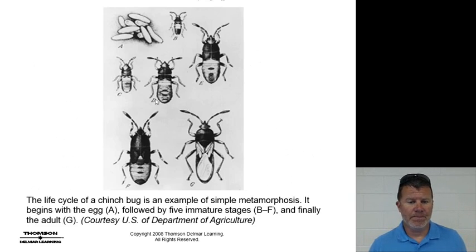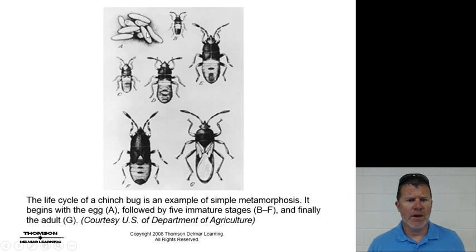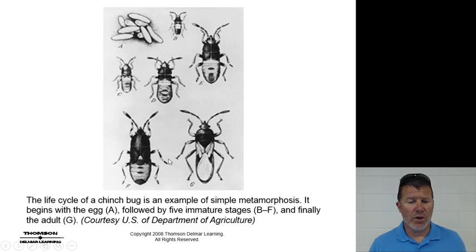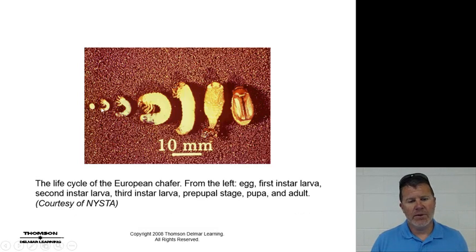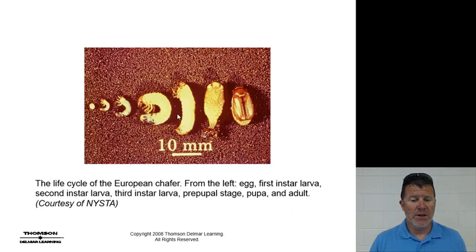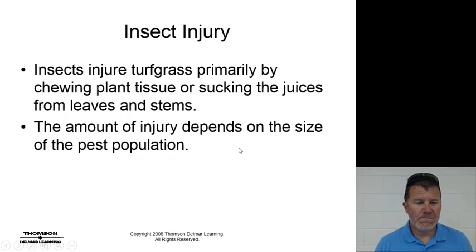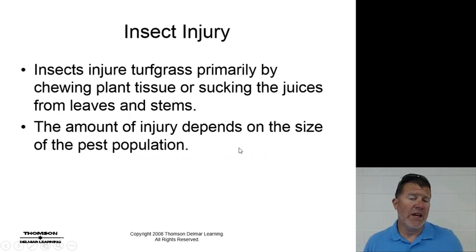Here's a life cycle of a chinch bug. We have the eggs, then stages B through F being the five immature stages, and G being the adult. We see the same thing with the chafer — egg, going through first instar larva, second, third, pupal stage, and then the adult.